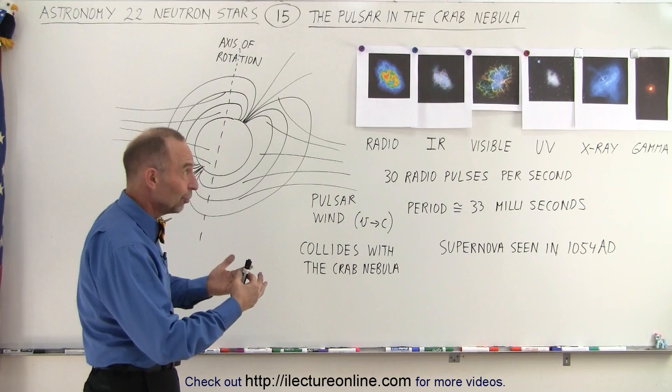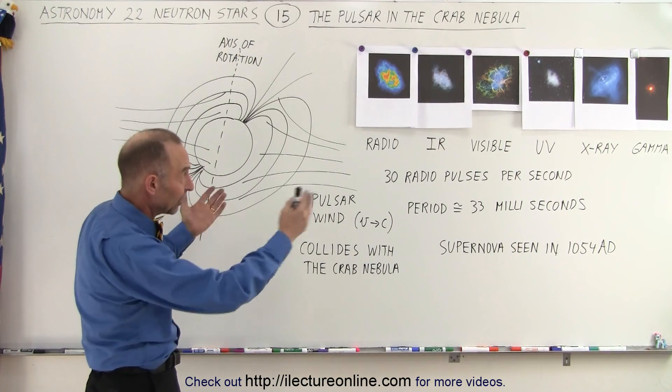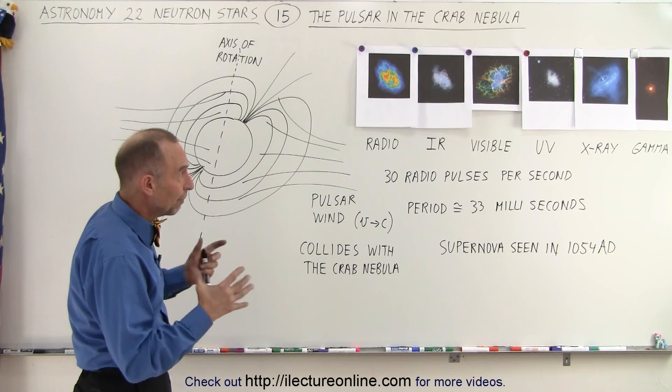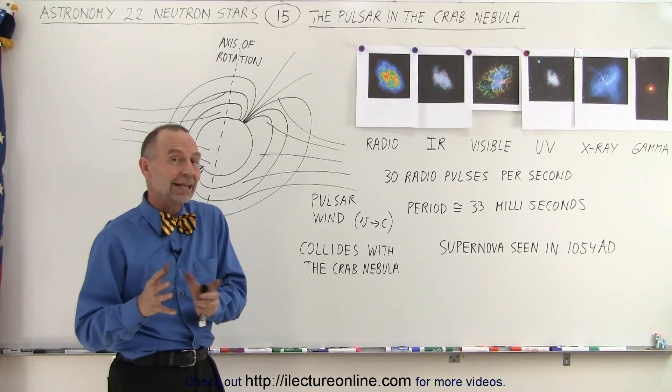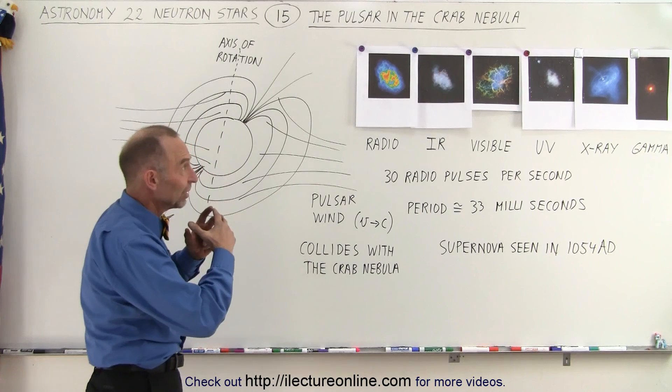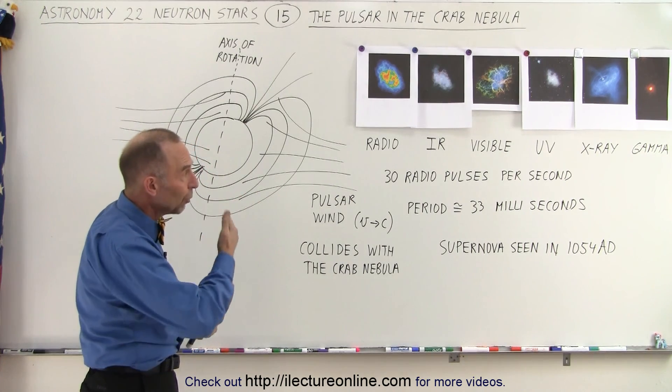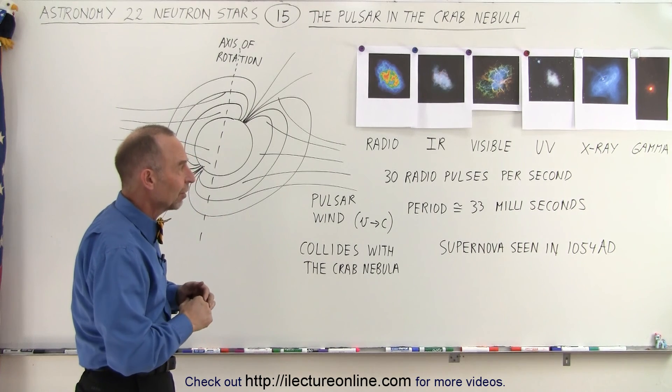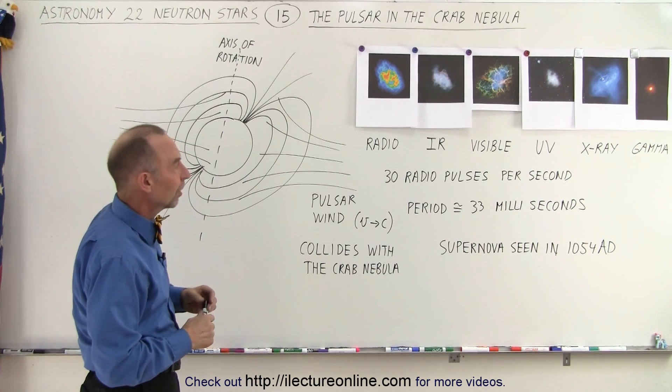And since it's so close, it's only 6,000 light years away, and we can take pictures in all those various E&M bandwidths, and the fact that it happened only a thousand years ago so we can still see the remnant, supernova remnant, we can learn a lot from the event causing that particular pulsar.